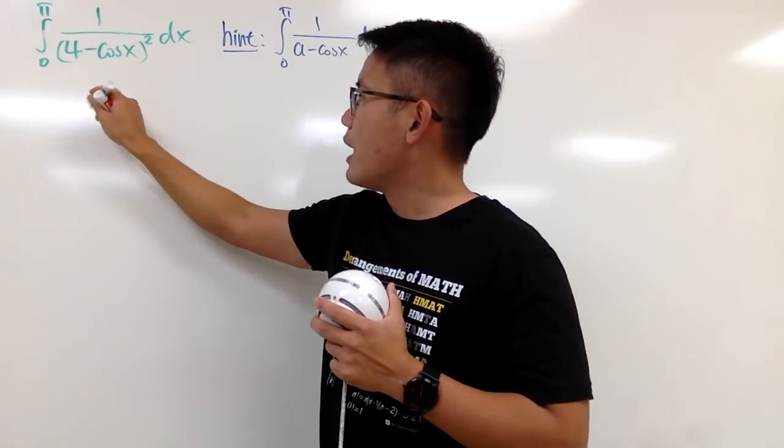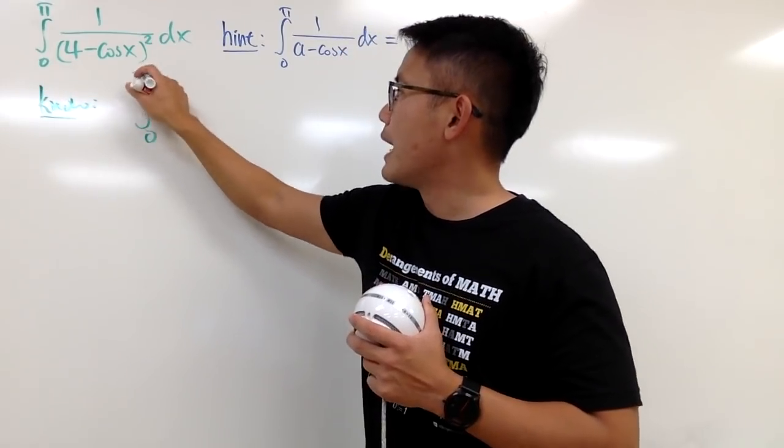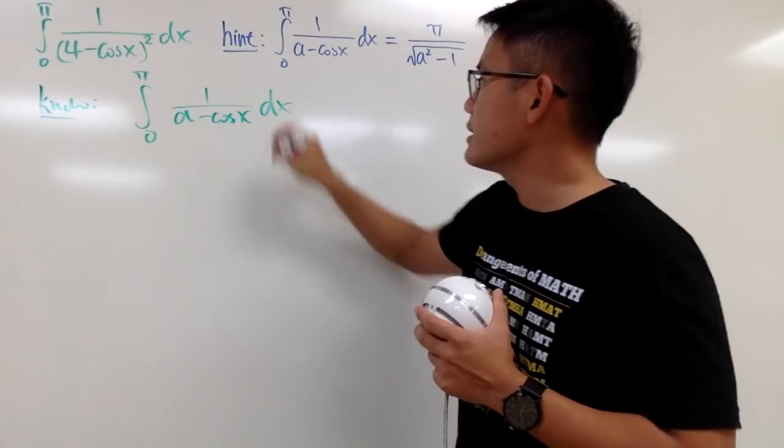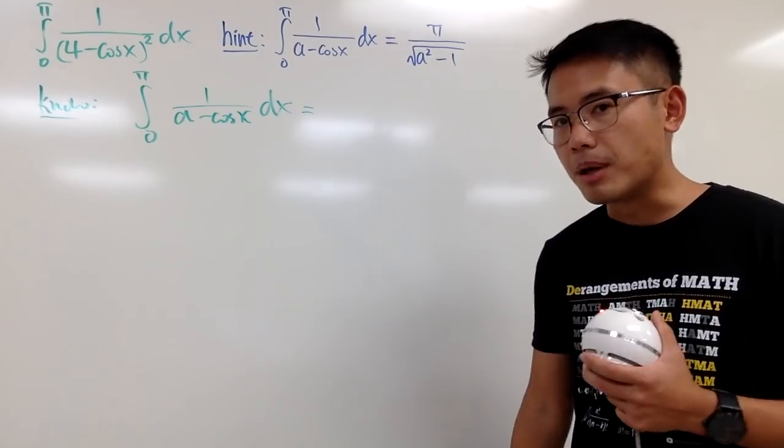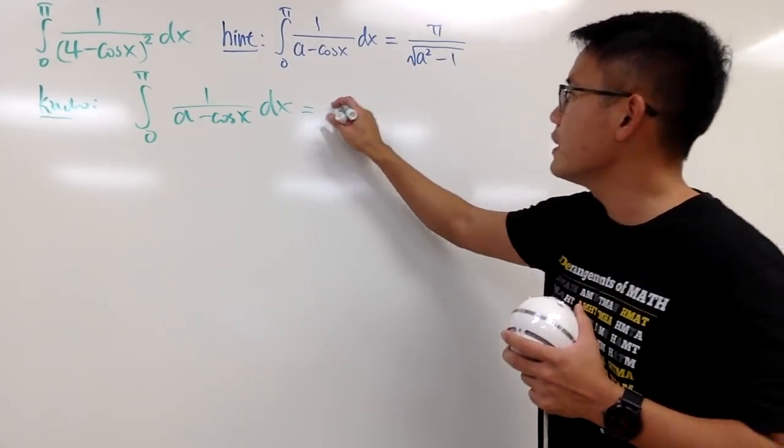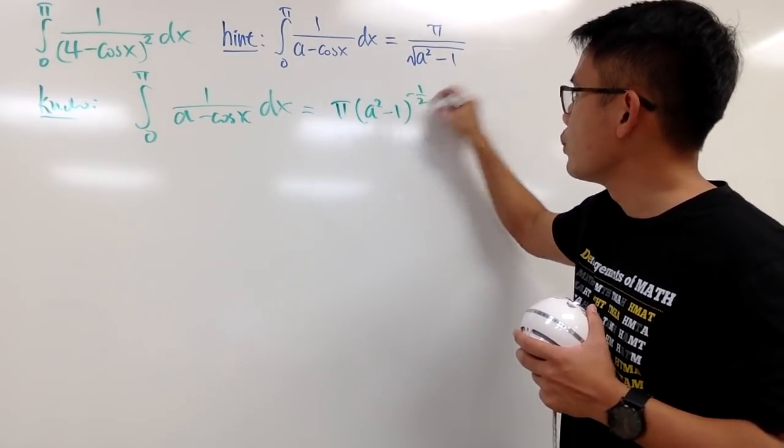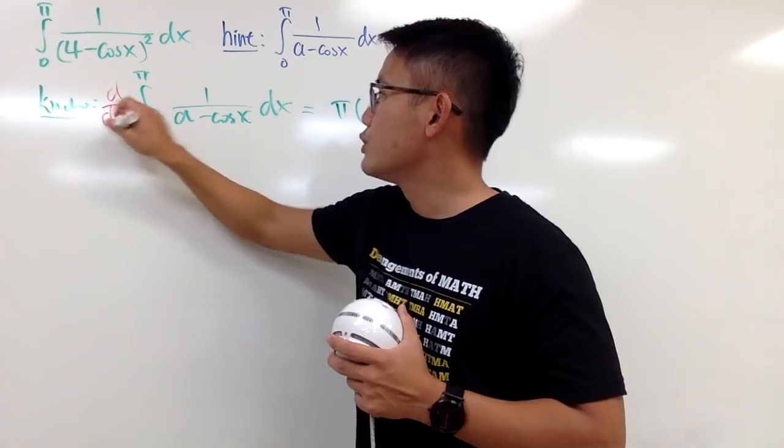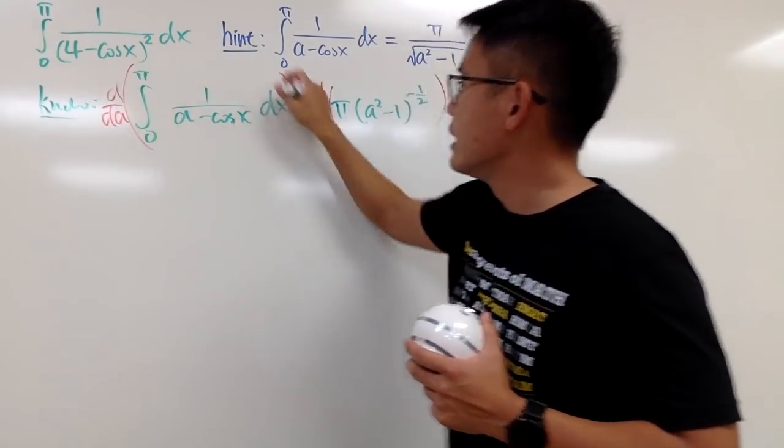So, here we go. Starting from what we know, which is the integral from 0 to pi of 1 over a minus cos x dx. And this right here turns out to be pi over that. But for simplicity purpose, I will write the square root as negative 1 half power, so you can easily take the derivative. So, that's pi times (a squared minus 1) raised to the negative 1 half power. And now, here's the deal. I will be differentiating both sides with respect to a, as I discussed it earlier with you guys.